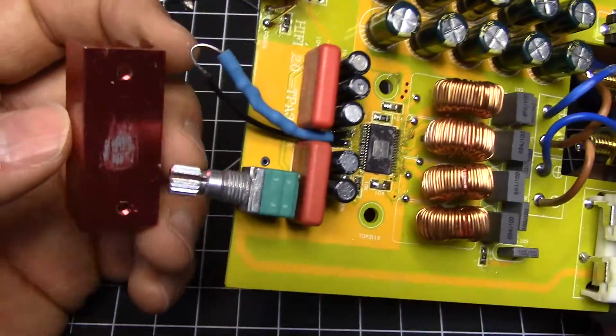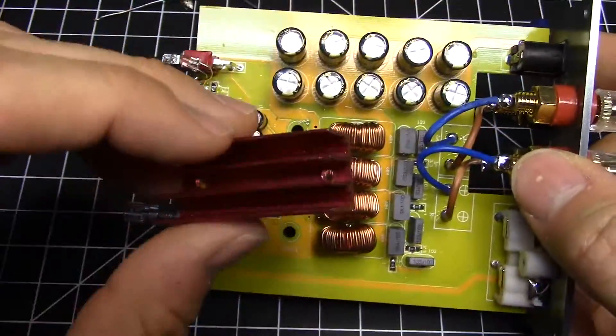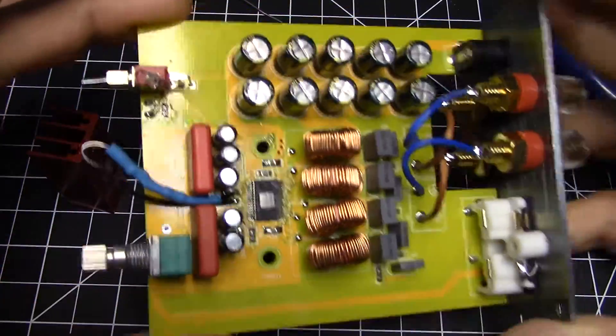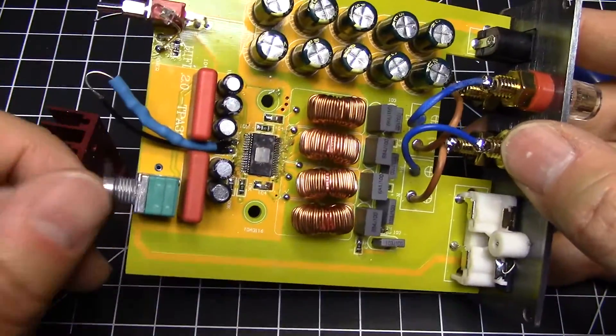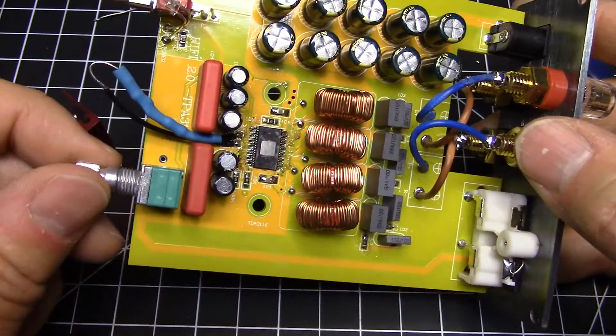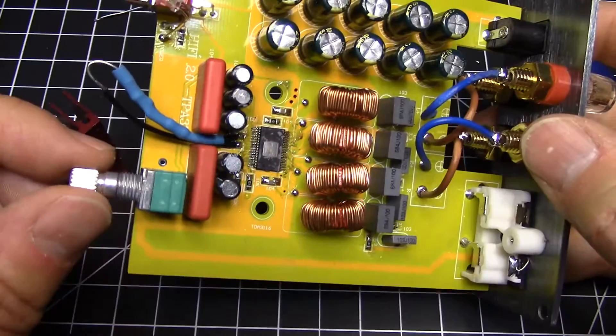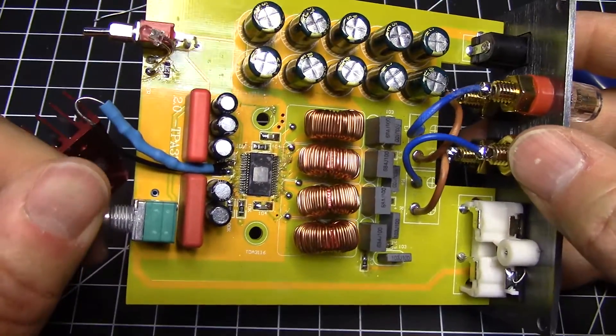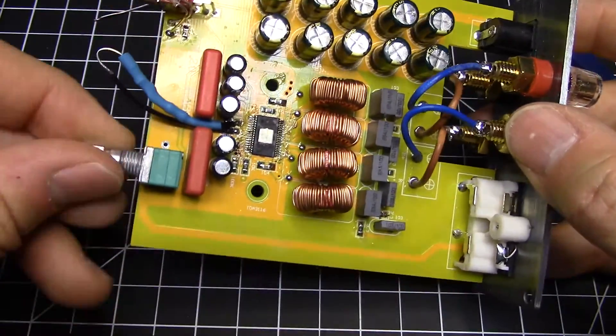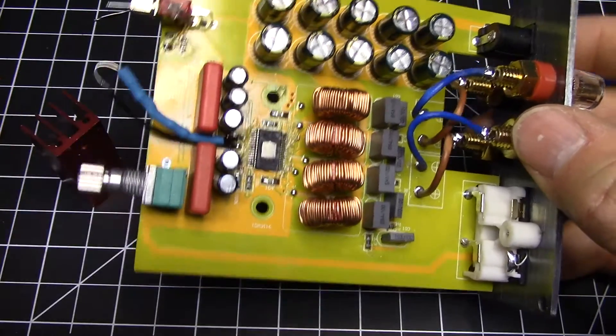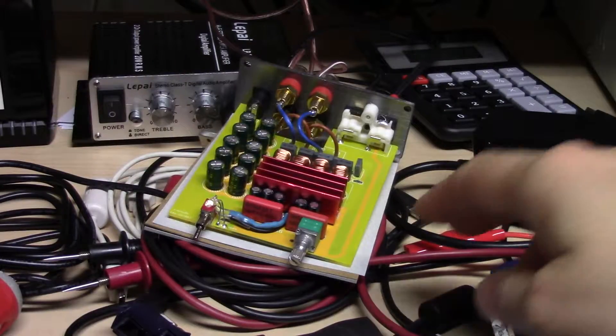When you have it at 20 dB like this, you need to send it a line level input. Unless you have a powerful input, you're not going to get full volume, but that's worth it. There's better control - you're not just turning it up a little bit and it's blasting you.